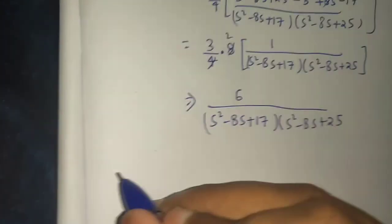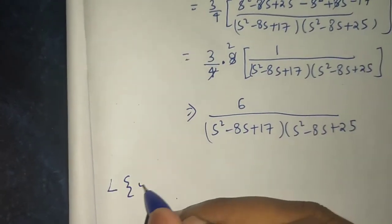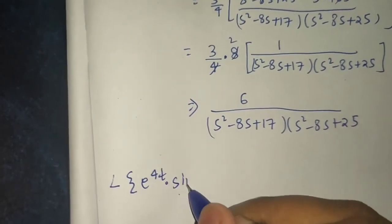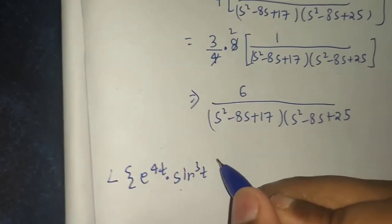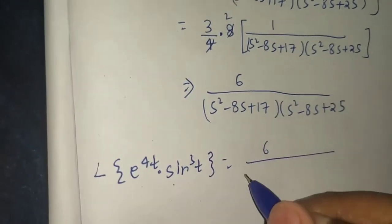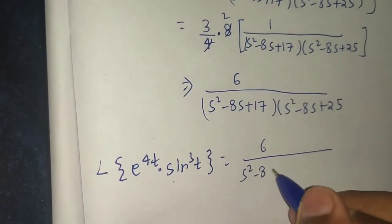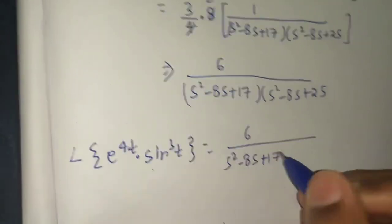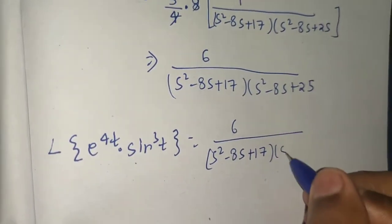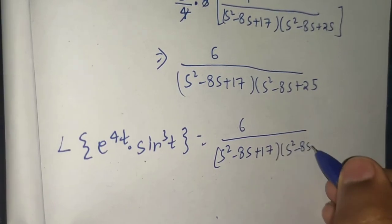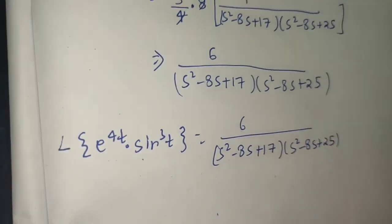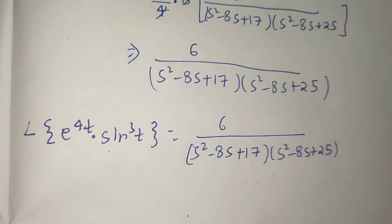So Laplace of e^(4t) · sin³(t) = 6 / [(s² − 8s + 17)(s² − 8s + 25)]. I hope you understood this question. Thanks and have a nice day.